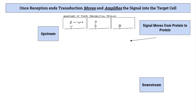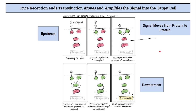Once reception ends, transduction begins. Transduction is made up of two components: the move component, where the signal is moved from the membrane to wherever the response is, and the amplification part, where one reception is turned into thousands of messages. When we talk about transduction pathways, we'll use the terms upstream and downstream a lot. The beginning, where the signal first starts by binding to the receptor, is upstream. Further along is downstream. Just like a river, the signal flows from upstream to downstream.